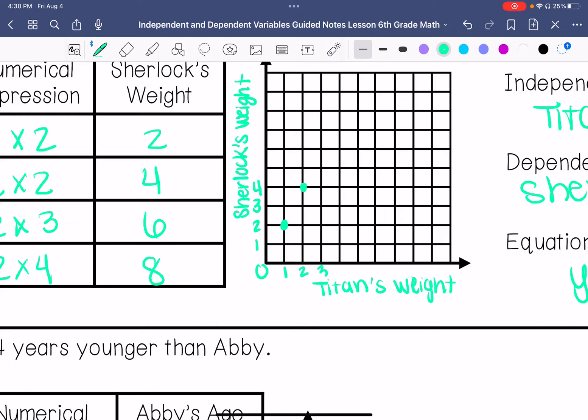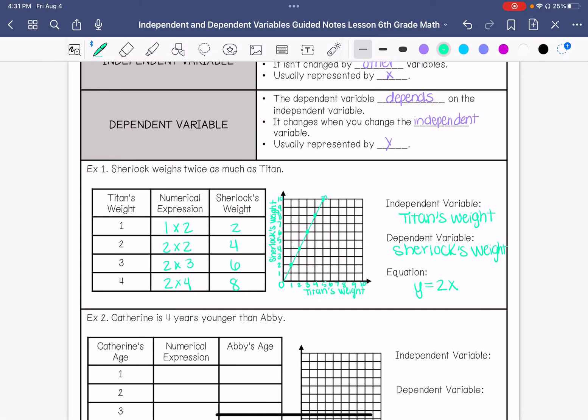When Titan is at 3, Sherlock is at 6. When Titan is at 4, Sherlock is at 8. And we can predict from here, when Titan's at 5, he's going to be at 10. So that's what that one's going to look like.